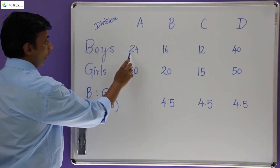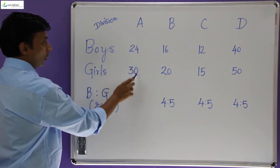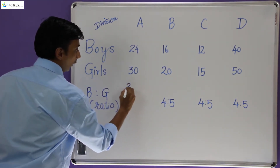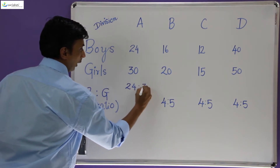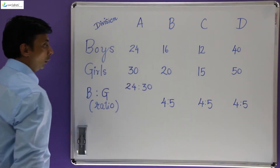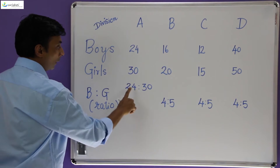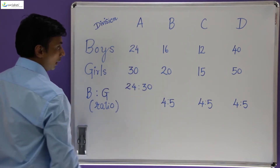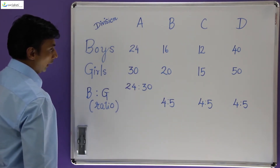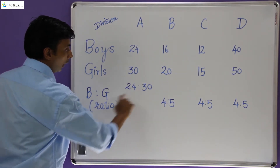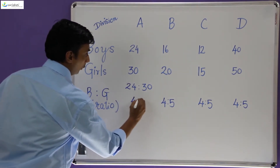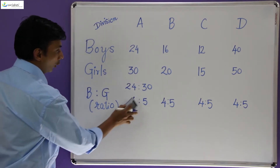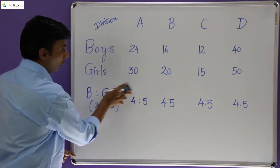Now if you notice over here, if I were to find the ratio of boys to girls, I can calculate the ratio as 24 is to 30. Ratio is basically division of two numbers — comparing two numbers by division. Now it is quite possible to simplify these two numbers. The common factor is 6, and if I divide both numbers by 6, I get 4 is to 5.